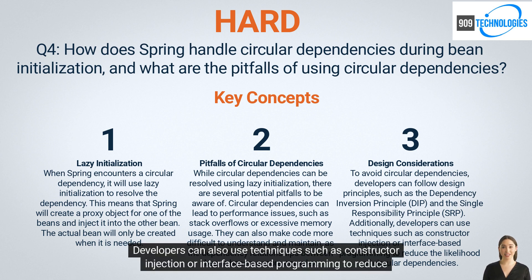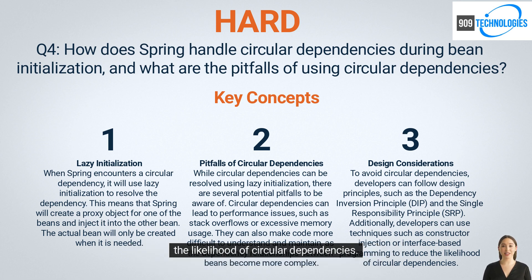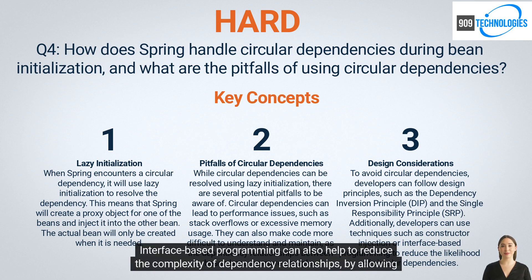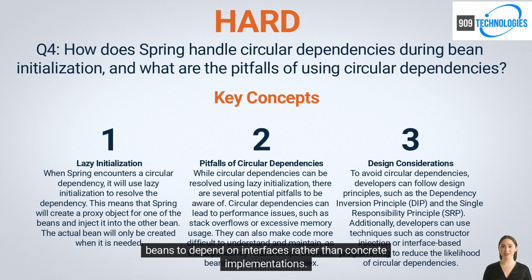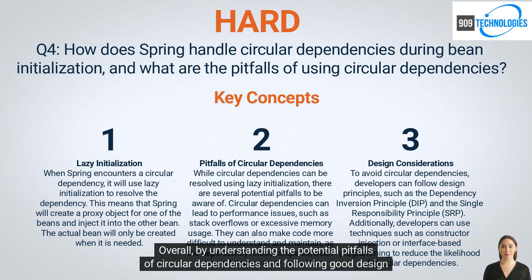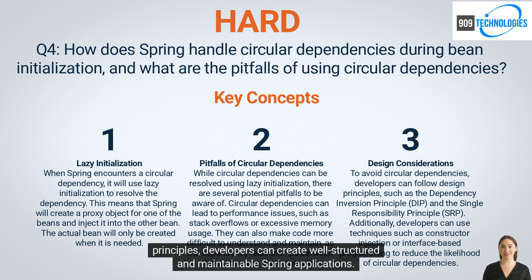Following these principles helps to ensure that classes have clear responsibilities and dependencies are kept to a minimum. Developers can also use techniques such as constructor injection or interface-based programming to reduce the likelihood of circular dependencies. Constructor injection can break the circular dependency by injecting the dependent bean through a constructor. Interface-based programming can reduce the complexity of dependency relationships by allowing beans to depend on interfaces rather than concrete implementations.